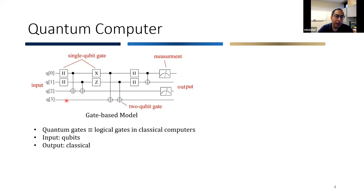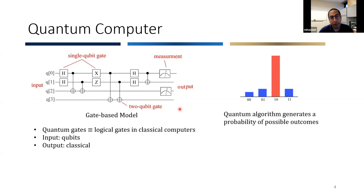In this approach, the input is a series of qubits, followed by a series of quantum gate operations. At the end, we perform quantum measurements to get a classical output. These quantum gates are analogous to logical gates in classical computers. However, because we are performing measurements, due to the stochasticity of the measurements, the output of the algorithm is not deterministic — it's probabilistic. Each time we run the same algorithm, we may get different answers, so we typically rerun the algorithm many times to find the correct answer with high probability.